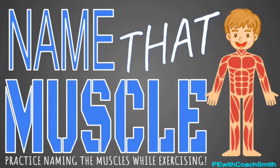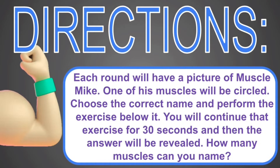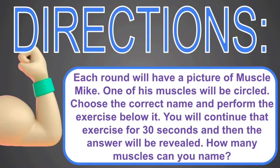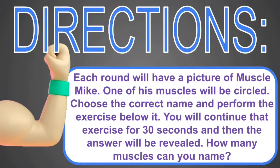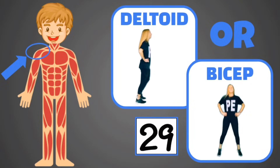Name that muscle. Each round will have a picture of muscle Mike — one of his muscles will be circled. Choose the correct name and perform the exercise below it. You will continue that exercise for 30 seconds, and then the answer will be revealed. How many muscles can you name? Name that muscle: deltoid or bicep?